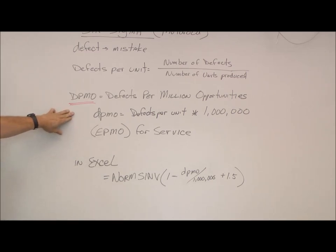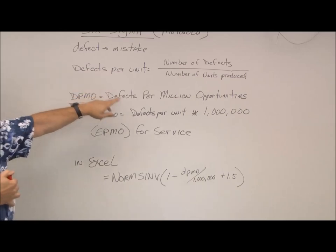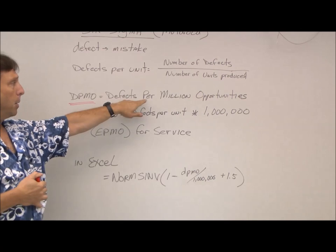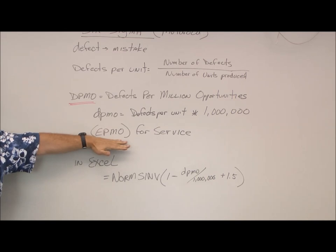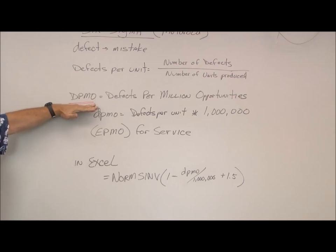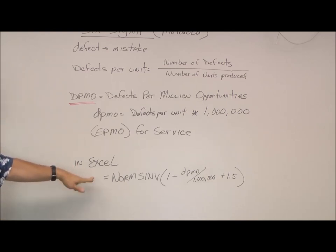So the DPMO is your defects per unit multiplied by a million. Just a little side note, Motorola, when they're talking about a service instead of a product, called it EPMO for a service and they called it DPMO for a product. Same thing, just slightly different terminology. You could also calculate this in Excel using this function, but typically when it's done for quality control, there's a chart that's on Moodle that will show you exactly how to figure out your Sigma.